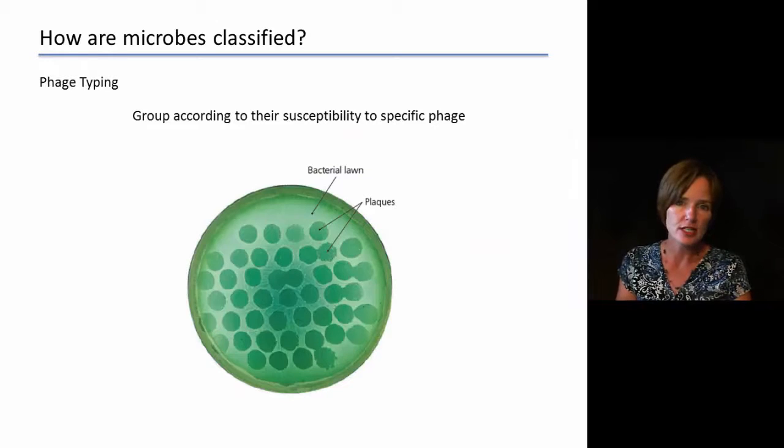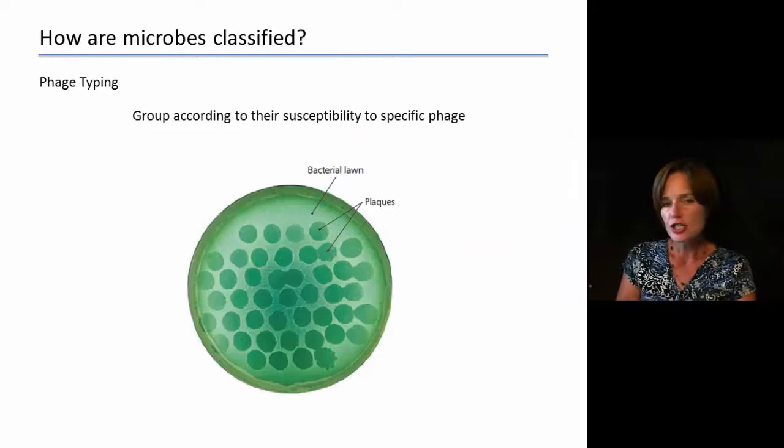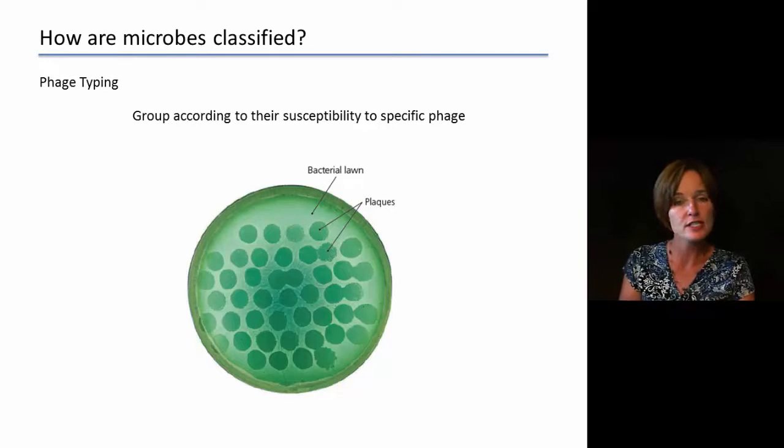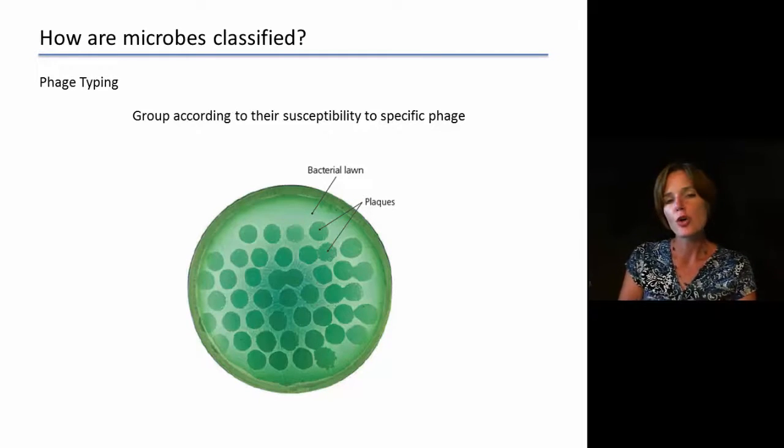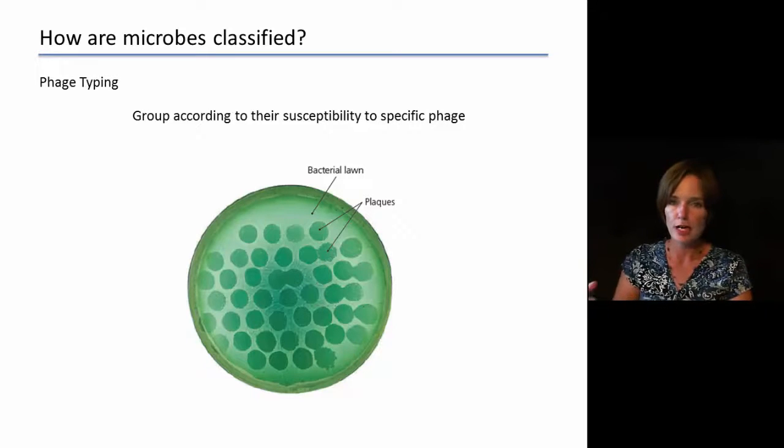Phage typing is another way to classify microbes. Phage typing has to do with phage or bacteriophage more specifically. These are essentially viruses that infect bacteria. So we can group different microbes according to whether or not they are susceptible to a specific phage. So are they infected by a phage?